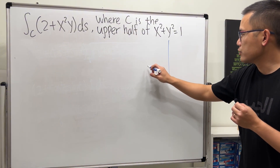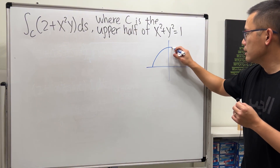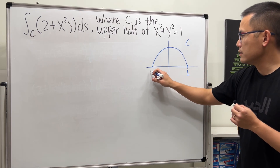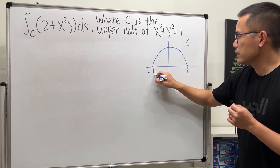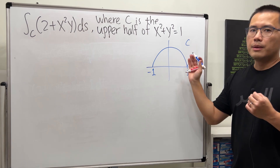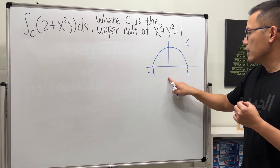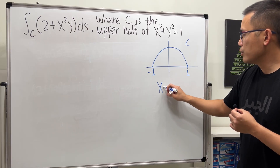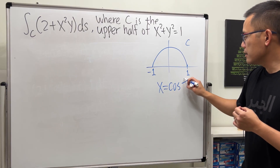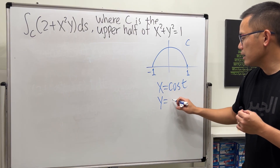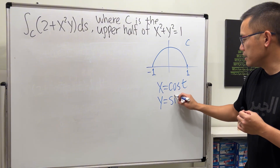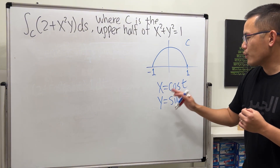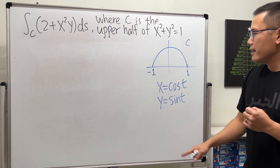Let's take a look at the picture. We want this arc to be our C, going from 1 to negative 1. Now we need a parametrization for this, and we can just use sine and cosine. Take x to be cosine t, and then y to be sine t — just like the good old days. x is the cosine, y gives you the sine.